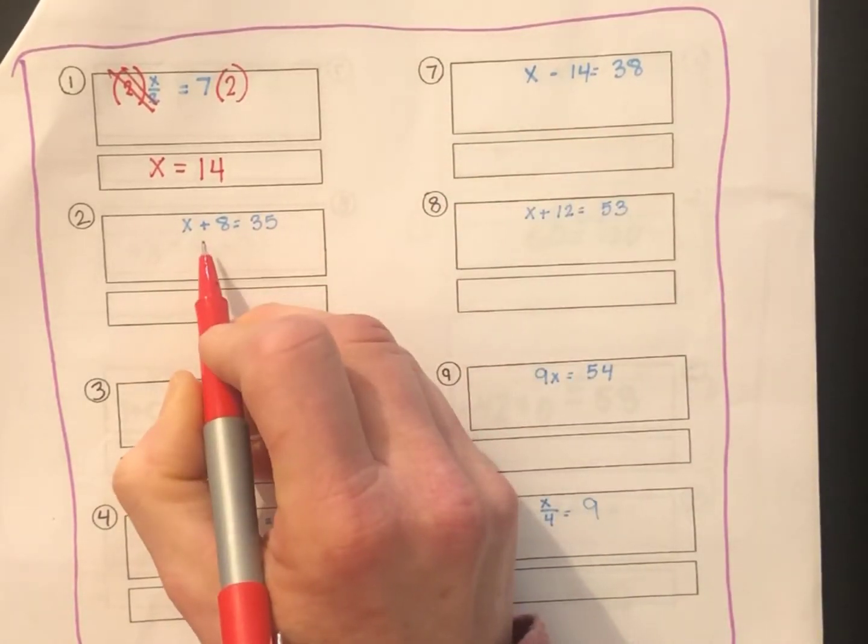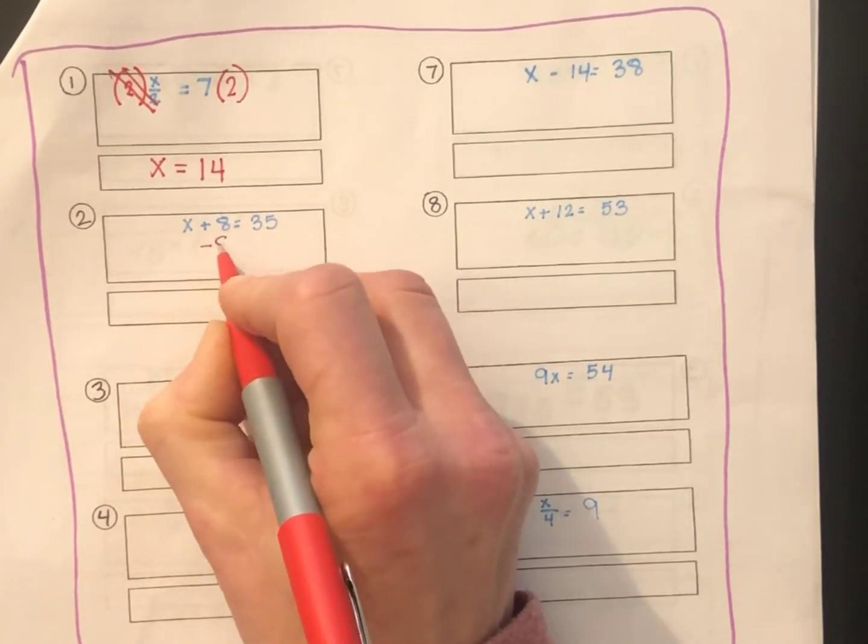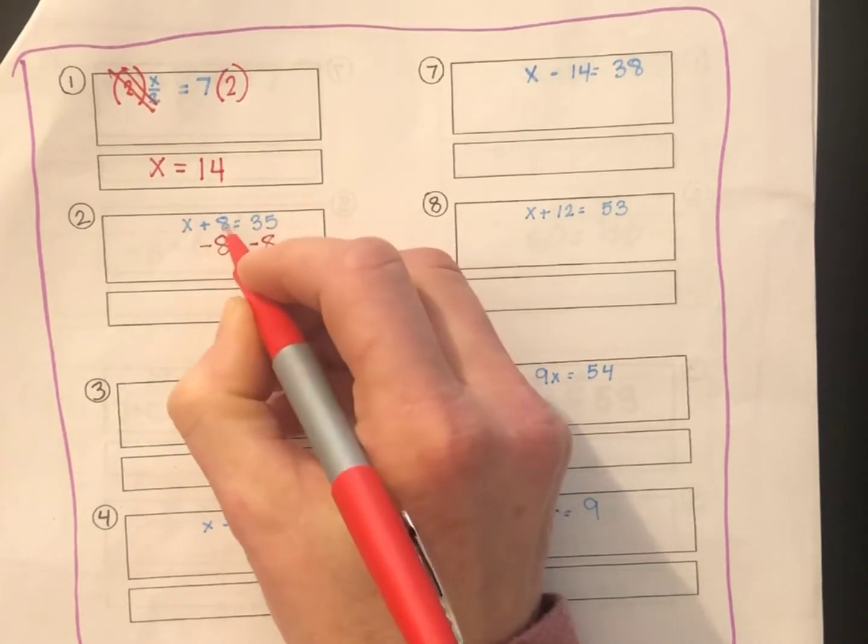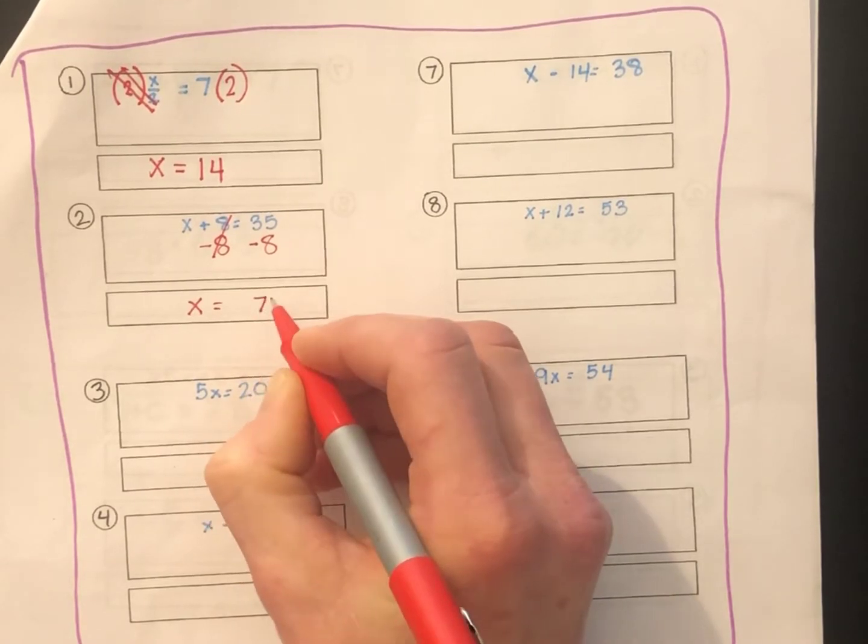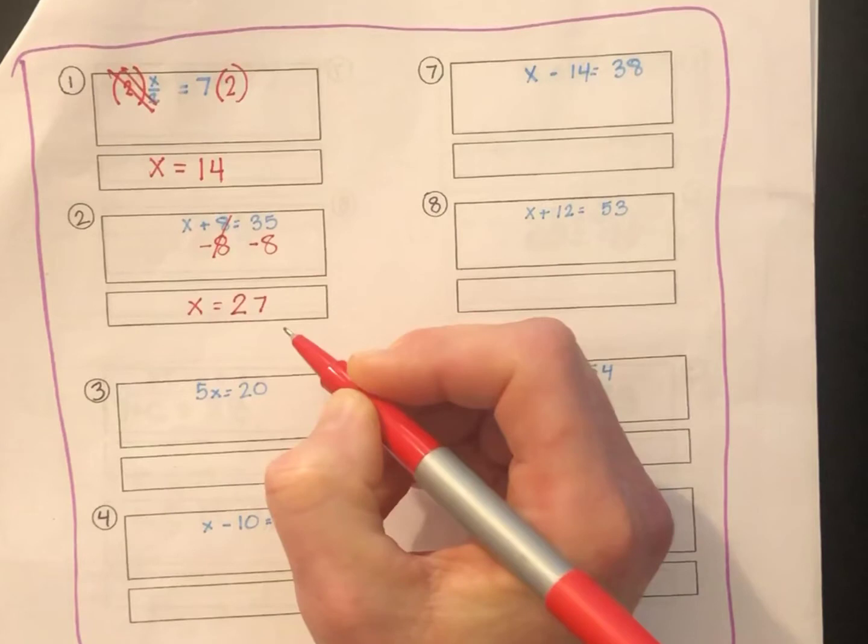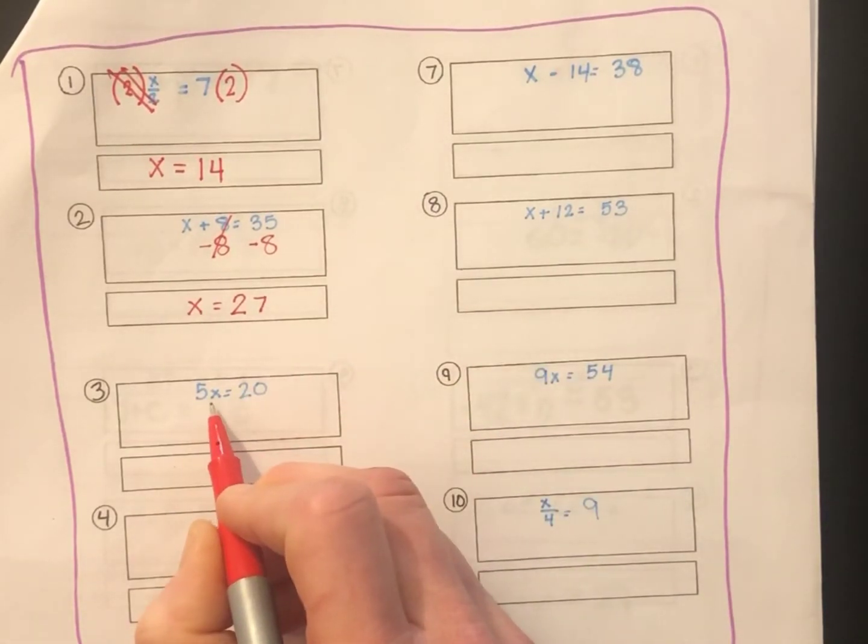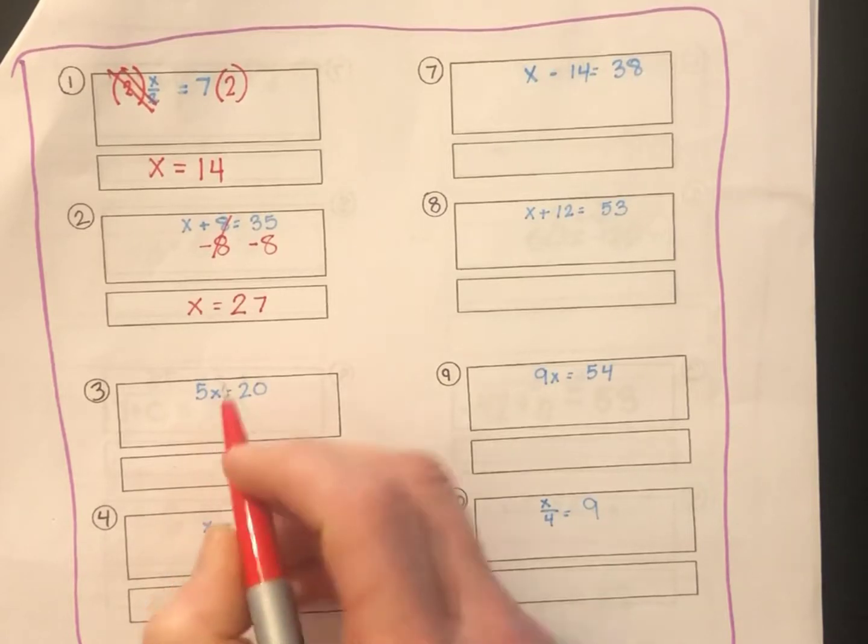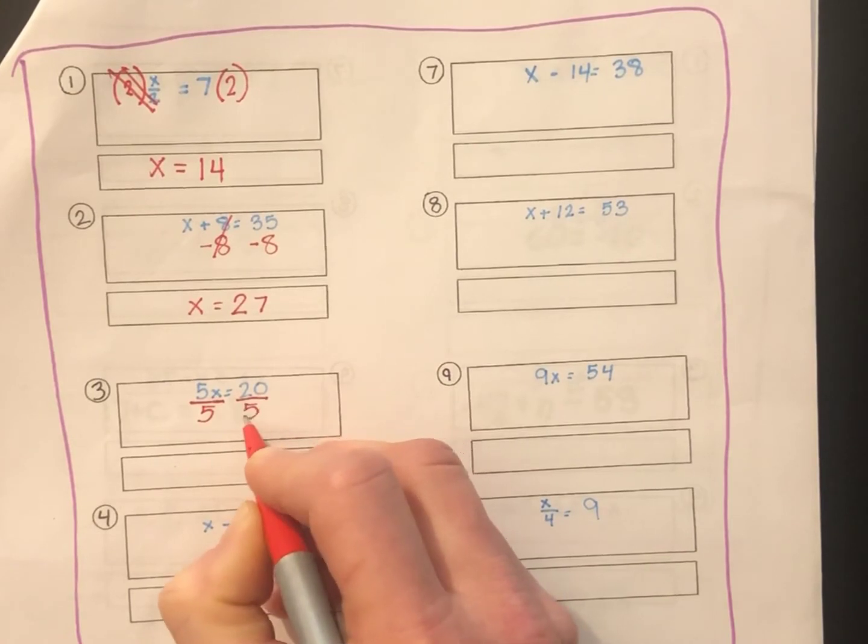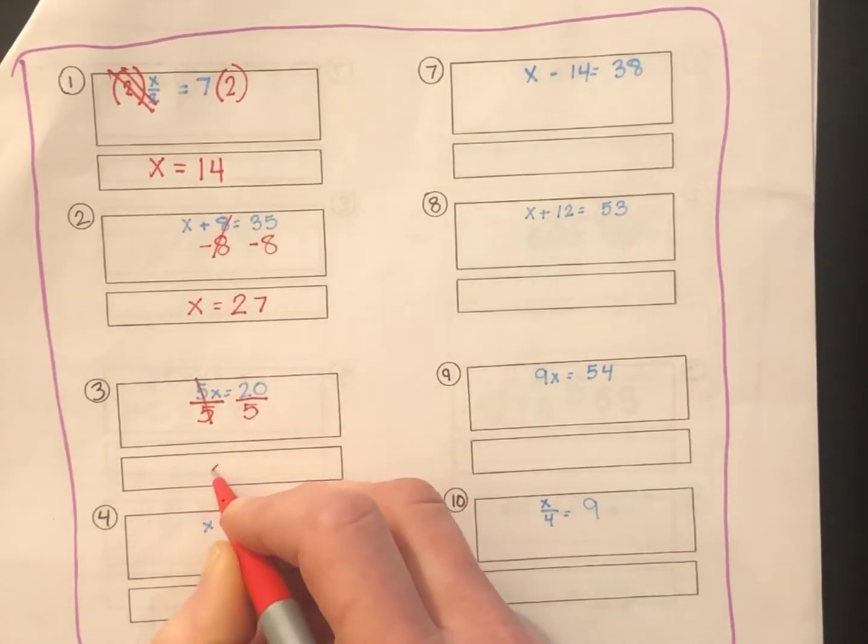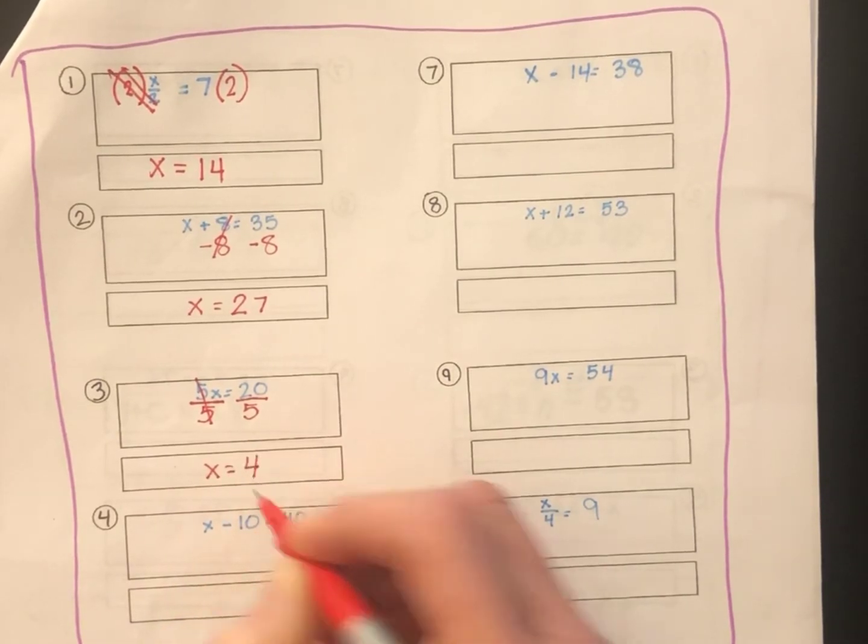Number 2 is similar to those we've already done. x plus 8 equals 35. The opposite of plus 8 is minus 8. Cancel out the 8, x equals 35 minus 8, which is 27. Number 3, 5 times x equals 20. This time you have multiplication, 5 times x. The opposite of multiplication is division. So to get rid of the 5, we'll take 5x divided by 5, divide by both sides, you end up with x equals 4. And if you check your answer, 5 times 4 is 20.